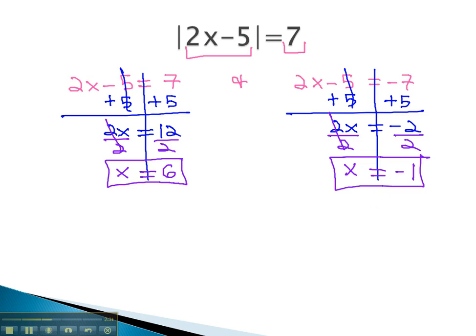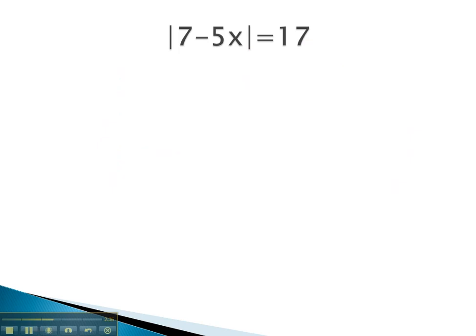Let's try another example, where we can see these two solutions work out. Here, we have 7 minus 5x in absolute value. This can be either positive or negative 17. Let's make the two equations to show this. 7 minus 5x equals the positive 17, and 7 minus 5x equals the negative 17.